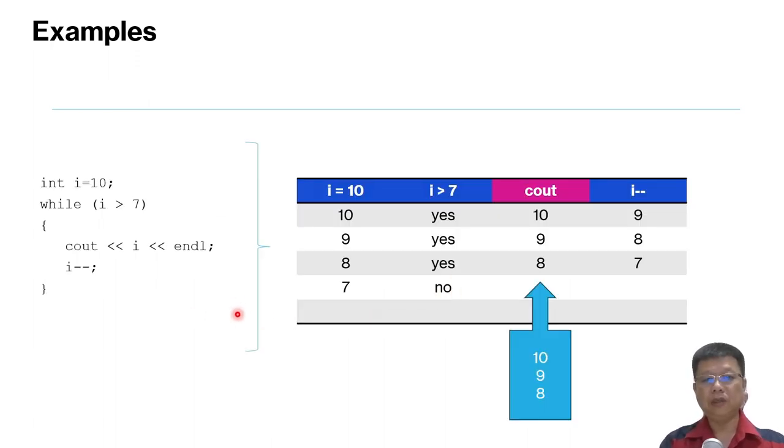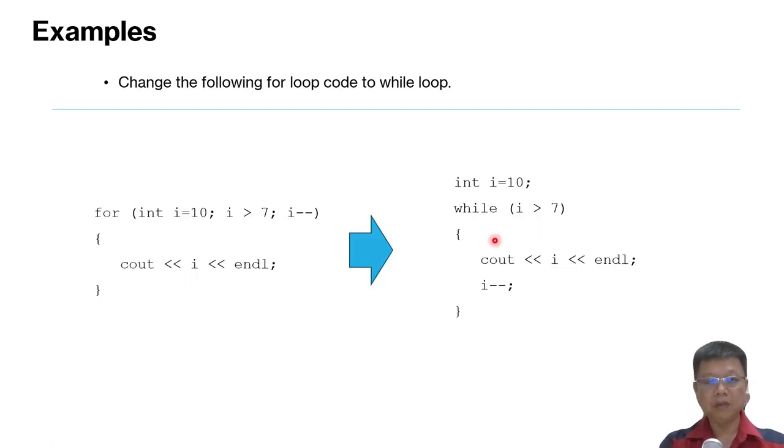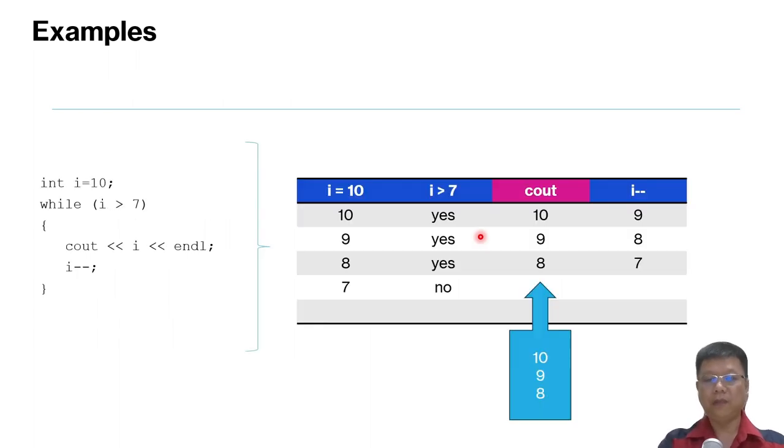And this shows the tables that how the while loops perform from the previous example. For loop to the while loop, and then we can create the table and check its output. Now you may try if you want.